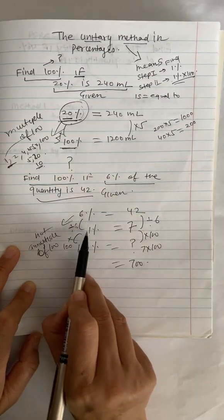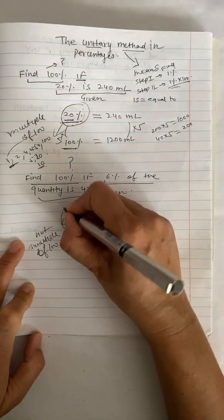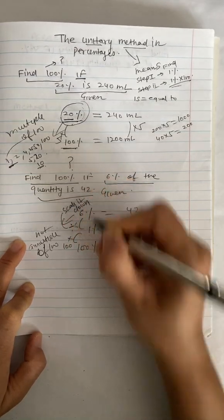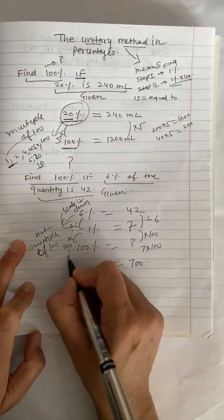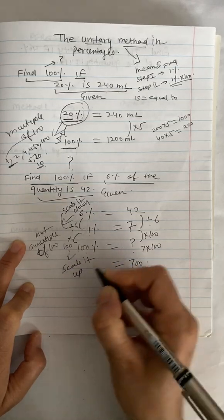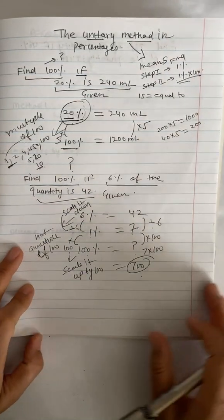To get 1% from 6%, I need to scale it down by 6. And to get 100% from 1%, we need to scale it up by 100. The final answer in this case is going to be 700.